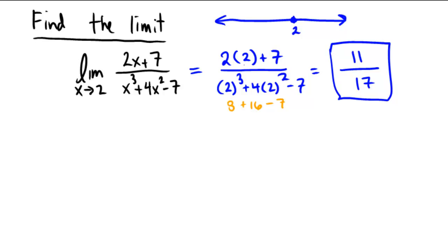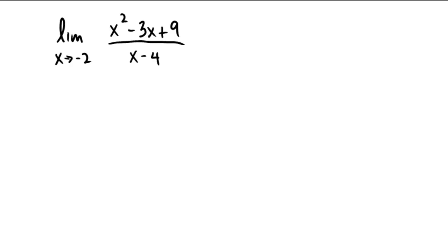Why don't you pause the video and see if you can do this problem on your own. The limit as x approaches negative 2 of x squared minus 3x plus 9 over the quantity x minus 4.